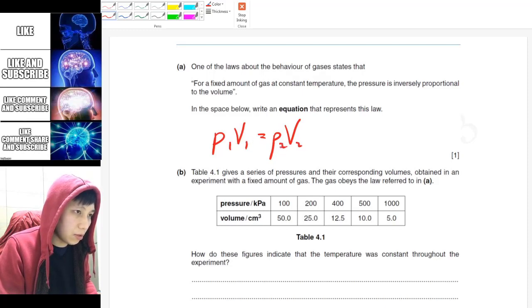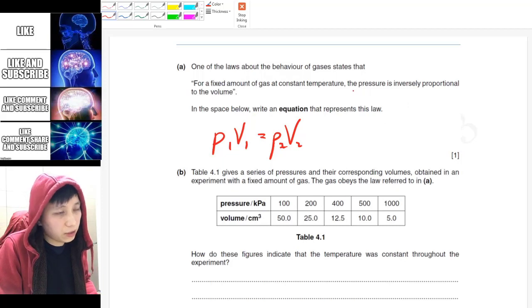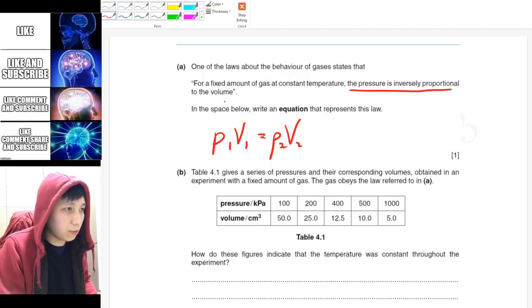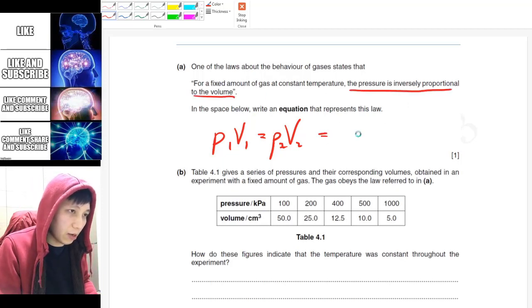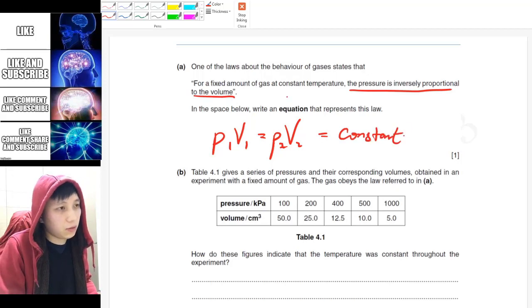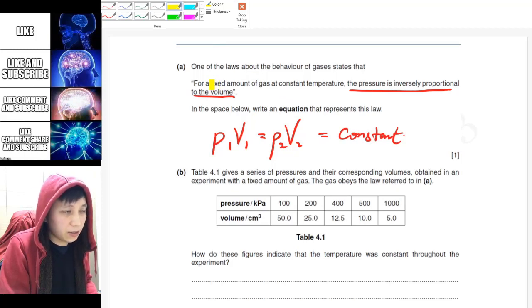To play it safe, because they also mentioned pressure is inversely proportional to the volume, I will also put down constant. And if you don't understand why they said fixed amount of gas at constant temperature, you should go back and look at the previous video.